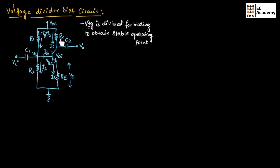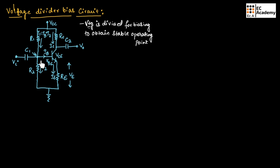Here, Rc is the output resistance, or the resistance connected across the collector terminal of a transistor. Re is the emitter resistance, which is used for stability. R1 and R2 are the voltage divider bias resistors. Vce is the collector-to-emitter voltage, Ve is the emitter voltage, Vbe is the base-to-emitter voltage which is 0.7 volts, and Vb is the base voltage. Ic is the collector current or output current, Ie is the emitter current. Ib is the base current; I2 is the current flowing through resistor R2 and I1 is the current flowing through resistor R1.